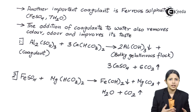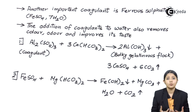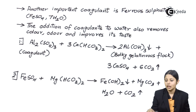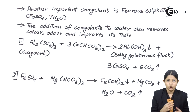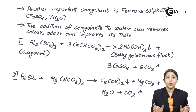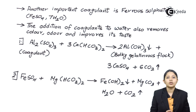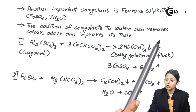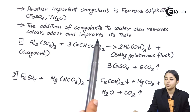Because of alum, water gets purified, and on further refining, that water can also become potable — usable for humans, animals, and plants for drinking and other purposes. The addition of coagulants to water also removes color and odor, and improves its taste.